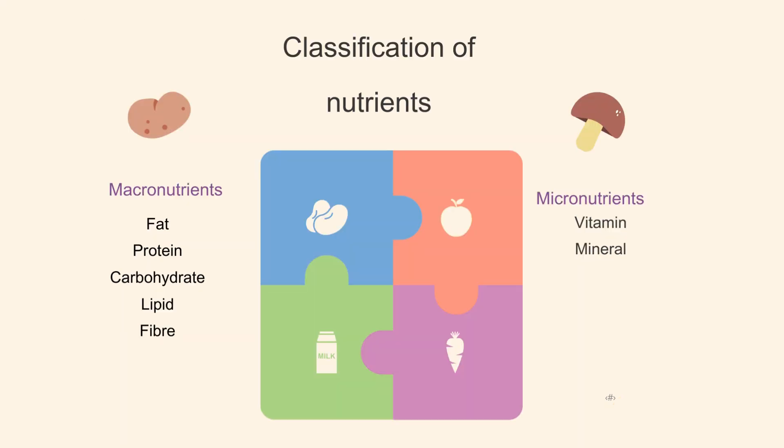Nutrients in food can be classified into macronutrients and micronutrients. Macronutrients are nutrients required by our body in large amounts; they include fat, protein, carbohydrate, lipid and fiber. Micronutrients are nutrients required by our body in small amounts; they include vitamins and minerals.